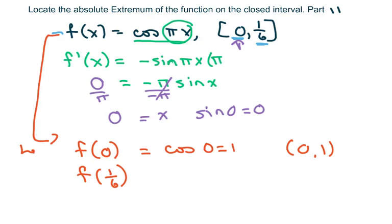That's your left endpoint. And your right endpoint: plug in one-sixth, and you get cosine of π over six, and cosine of π over six is square root of three over two. So we have one-sixth comma square root of three over two.